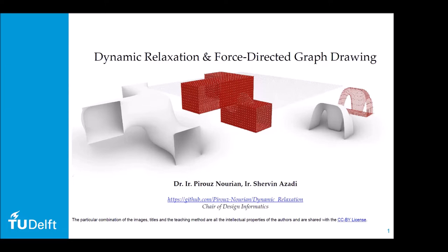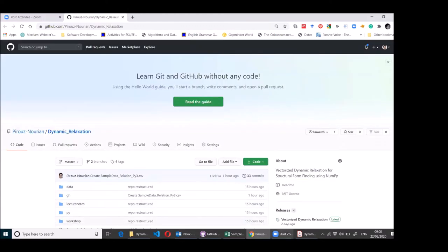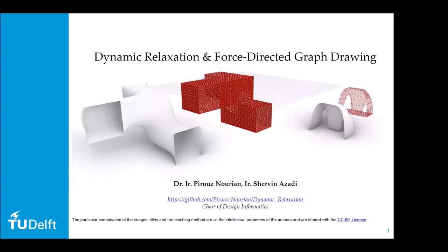Everything you see in these slides has already been implemented in Python and is available in this repository. It's been reorganized and these same lecture notes are included. It's a fully open-source repository for dynamic relaxation — both for relaxing meshes including making so-called minimal surfaces, and also for making catenary structures such as the ones you have to make in this course.